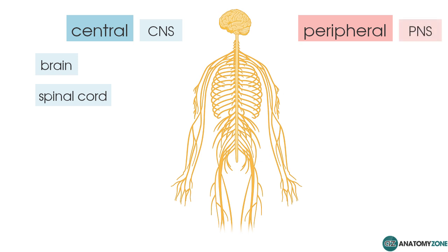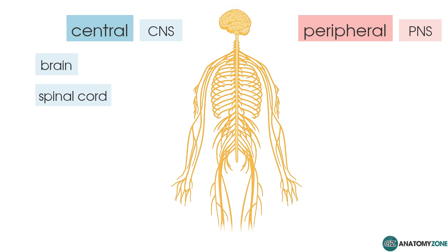The CNS consists of the brain and the spinal cord, which you can see in this diagram here. The CNS is responsible for complex information processing — it is essentially our control center where all the environmental information is processed.